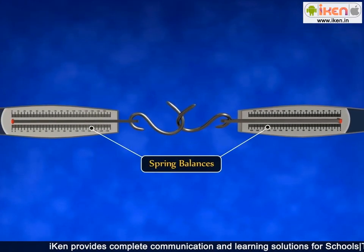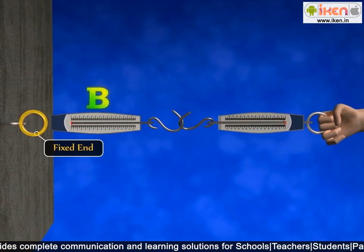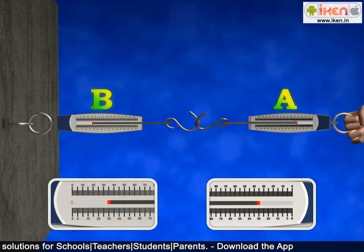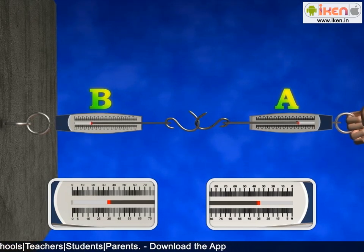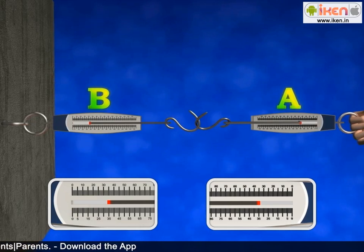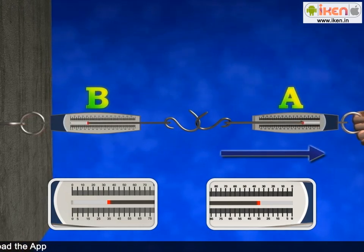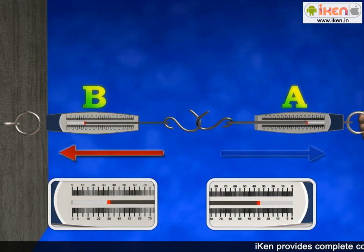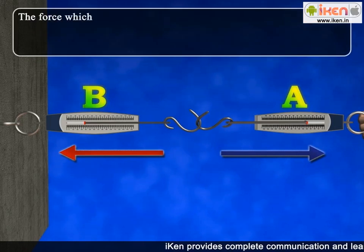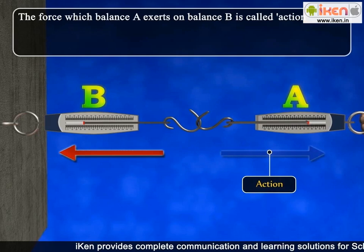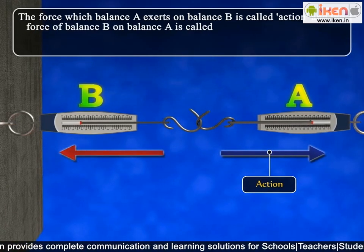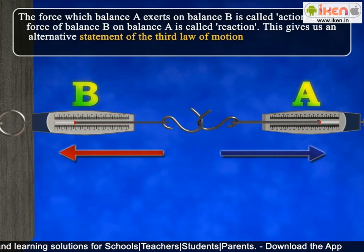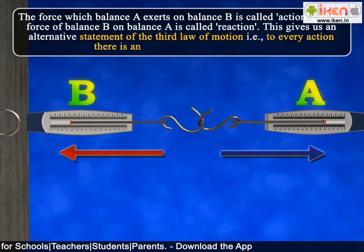Consider two spring balances connected together. The fixed end of balance B is attached to a rigid support. When a force is applied on the free end of spring balance A, it is observed that both spring balances show the same readings on their scales. This means the force exerted by spring balance A on balance B is equal but in the opposite direction to the force exerted by balance B on balance A. The force which balance A exerts on balance B is called action, and the force of balance B on balance A is called reaction. This gives us the alternative statement of the third law: to every action, there is an equal and opposite reaction.